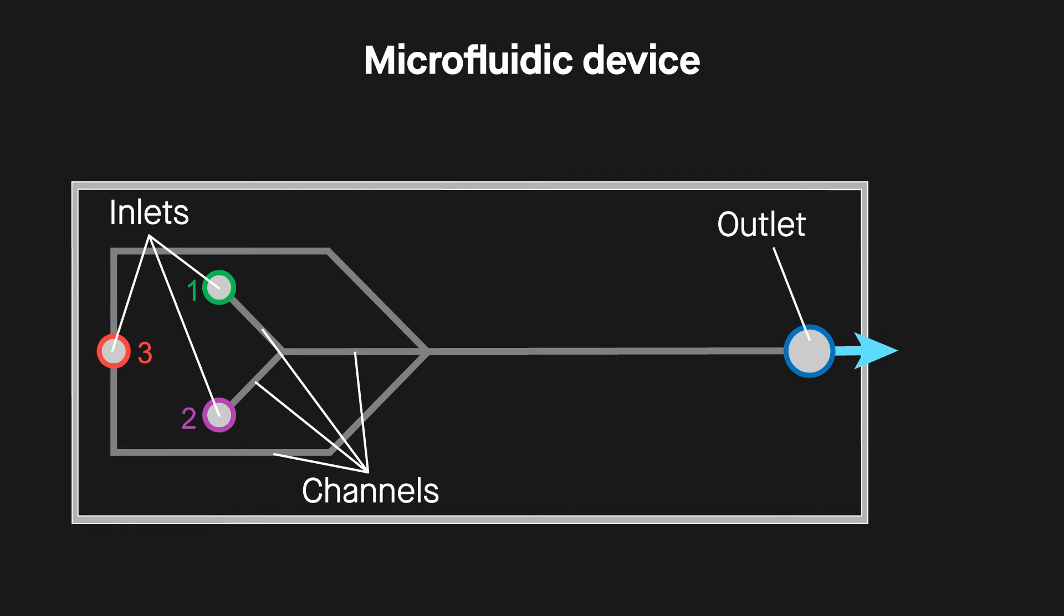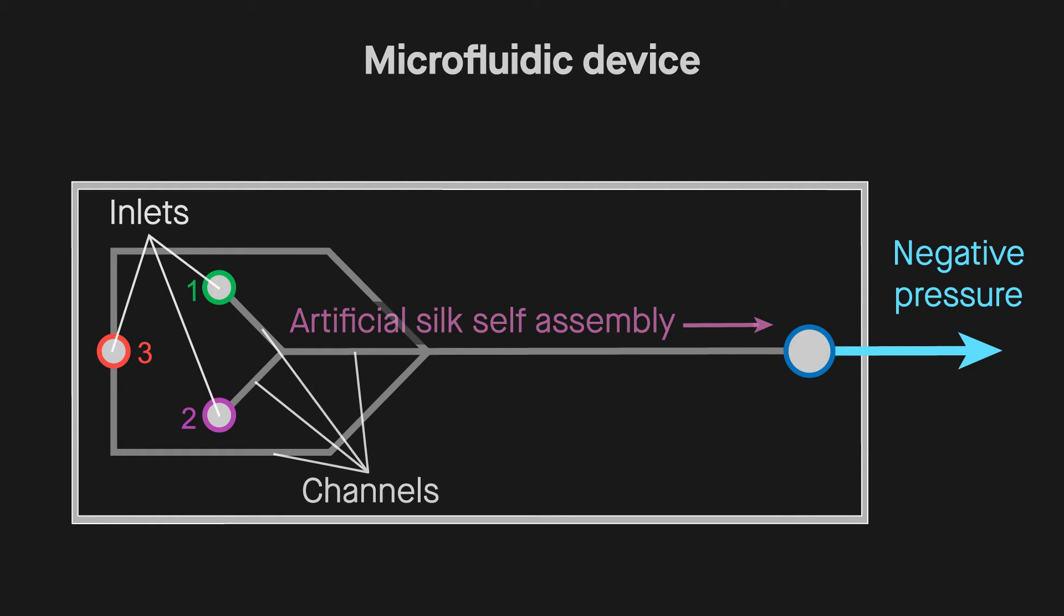Similar to how natural silk in spiders is pulled, rather than pushed out, the device operates under negative pressure and the artificial silk self-assembles as it travels through the chip.